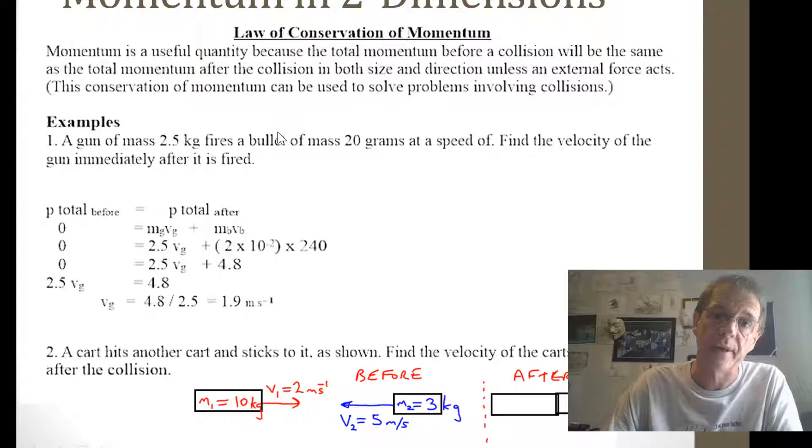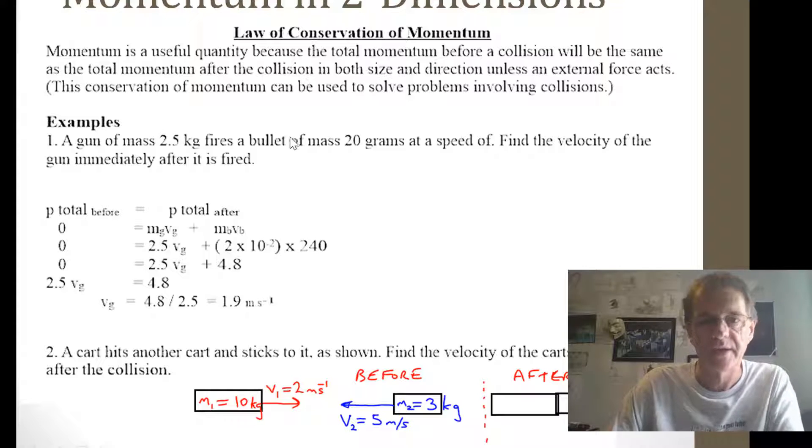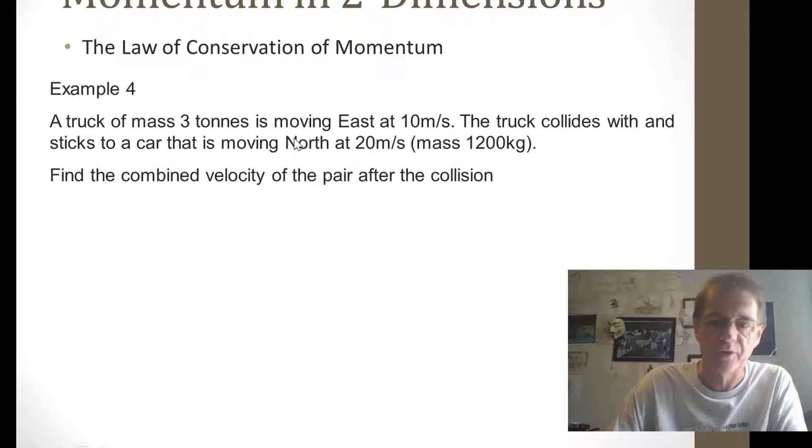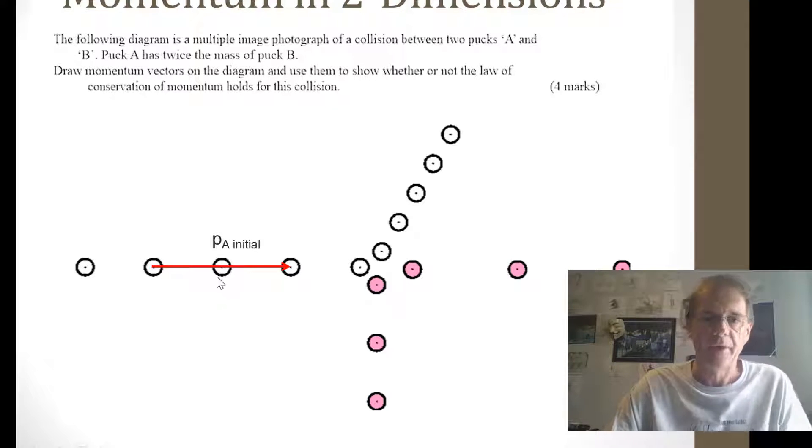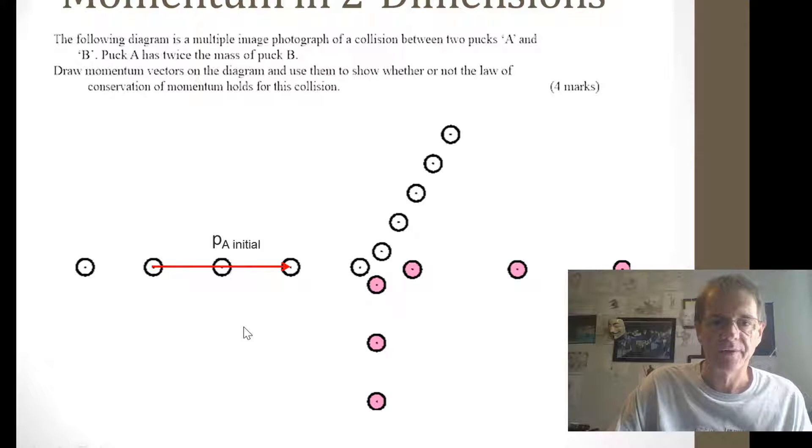So if we look at Mr McGarry's PowerPoint here we've got the one-dimensional questions here, some examples of two-dimensional ones which you've already done and then you get these sort of multi-image ones. If you're given a question like that your first thing is to consider what's the masses going on and here we've got a mass of A which is twice the mass of Puck B so you go over twice as many images here when you draw this. That's your PA initial layer and when you come and do your PB then you only have to go over one pair of images.